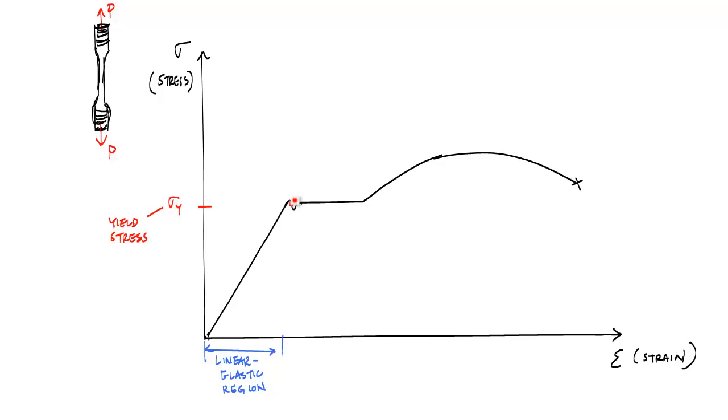Once you've reached this yield point, or what sometimes is called the proportional limit, you start to have permanent deformation. It's like bending a piece of plastic and it won't go back to its original shape. There's a point where if you bend it just enough, and in this region right here where the loading stays constant but the specimen continues to elongate, is called the plastic region.